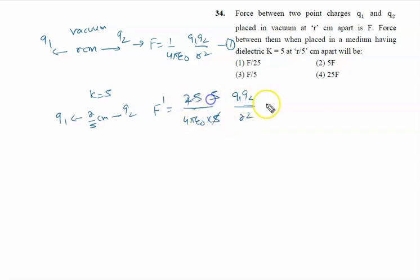5s are 25, it will be 5. Then one upon four pi epsilon not q1 q2 upon r square is equation number two. Now divide equation number two by equation number one.